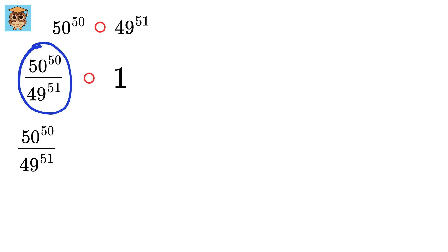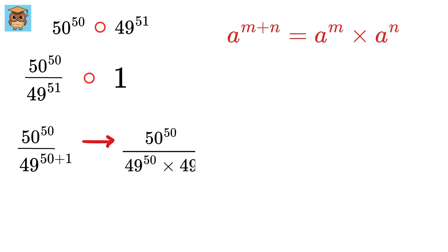Now we will only work on the left-hand side. You can write this as 49 raised to 50 plus 1. Hence, using power rule, it becomes 49 to the 50 times 49th. Check both of these powers. They are the same. So we can write this as 50 upon 49 raised to 50 times 1 upon 49.